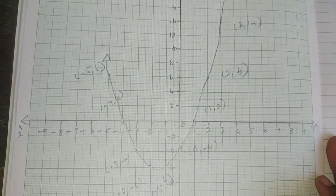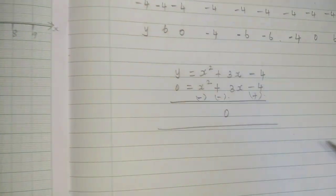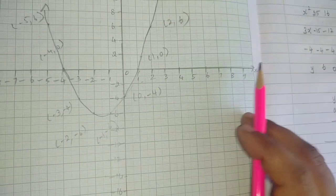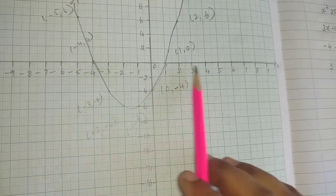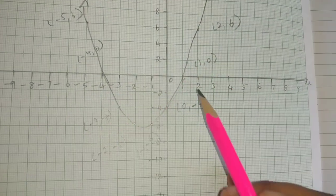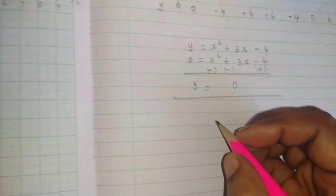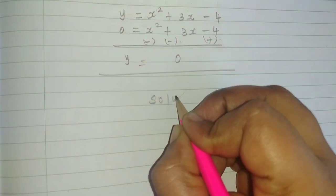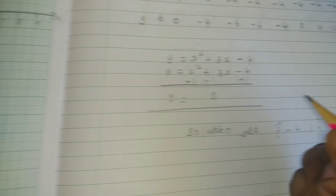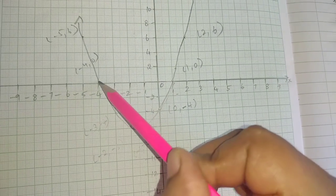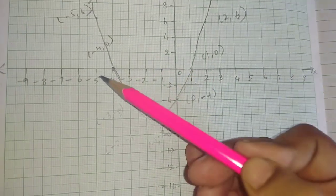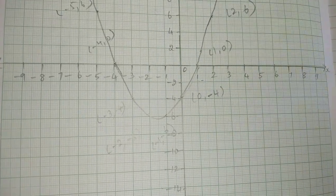What do we do now? In the x-axis, where the curve meets the x-axis, those values are the solution set. The curve meets the x-axis at minus 4 and 1. So the solution set is minus 4 comma 1. Clear? Thank you.